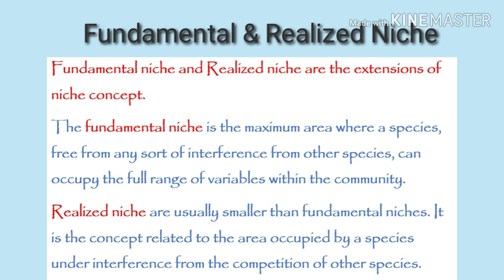Now there are two types of niche: fundamental and realized. These are extensions of the niche concept. The fundamental niche is the maximum area where a species, free from any interference from other species, can occupy the full range of variables within the community. It includes the total range of environmental conditions suitable for the existence of that species without predation or interference from any other species.